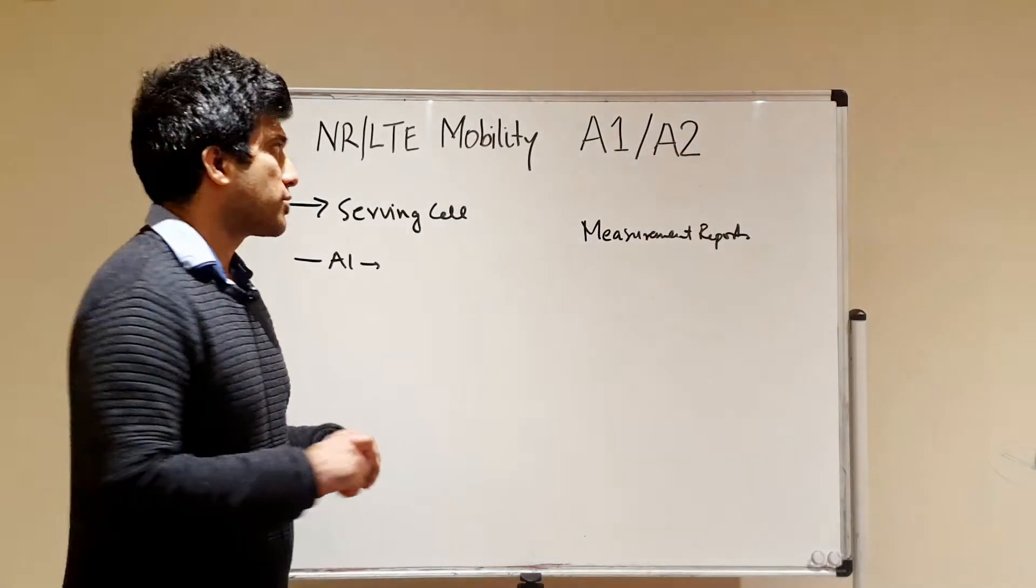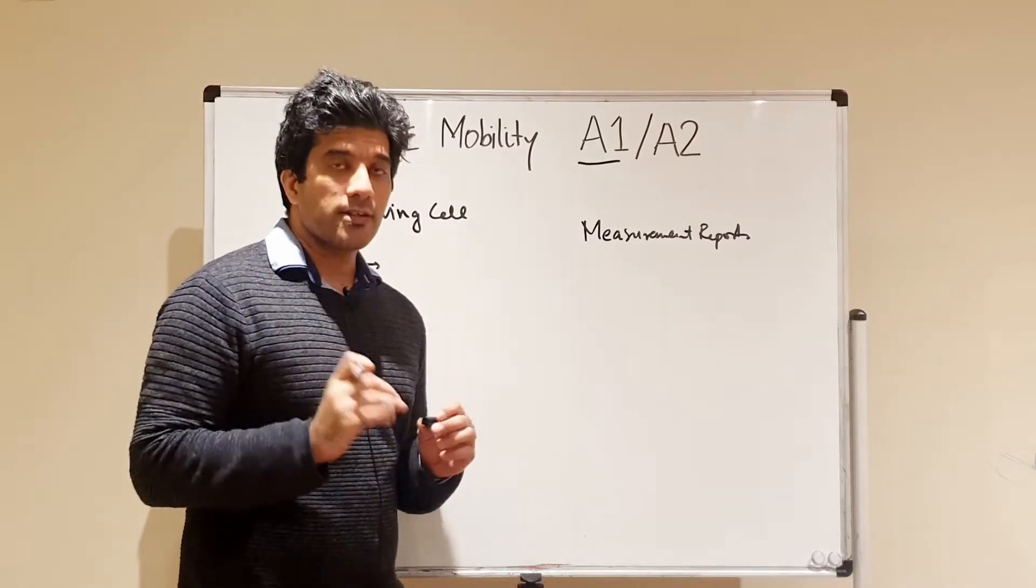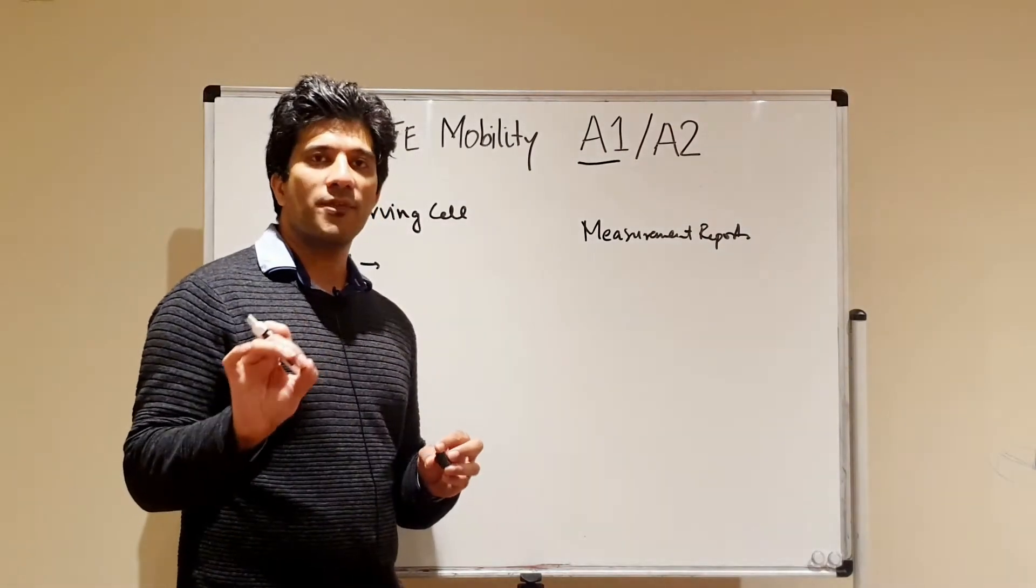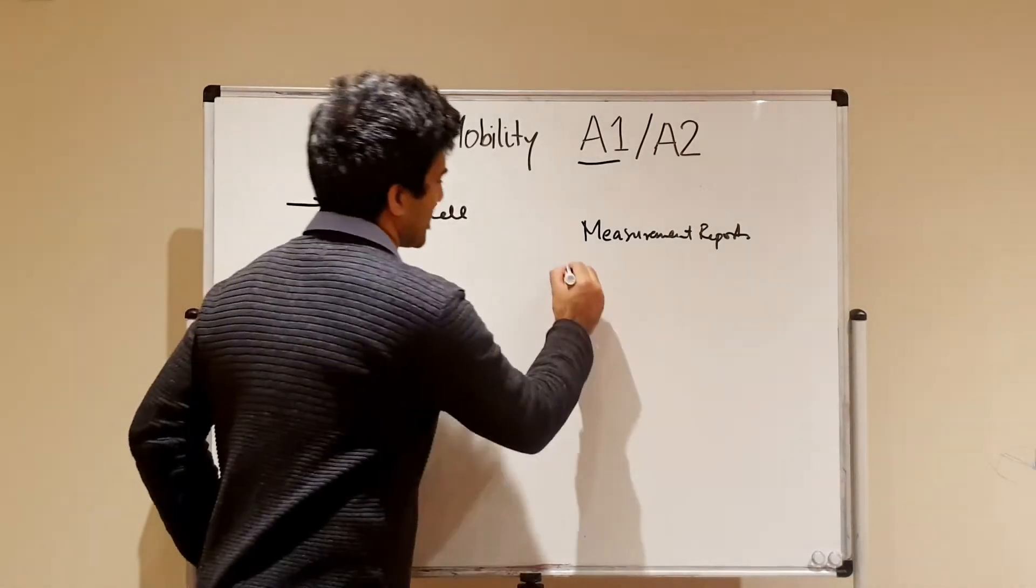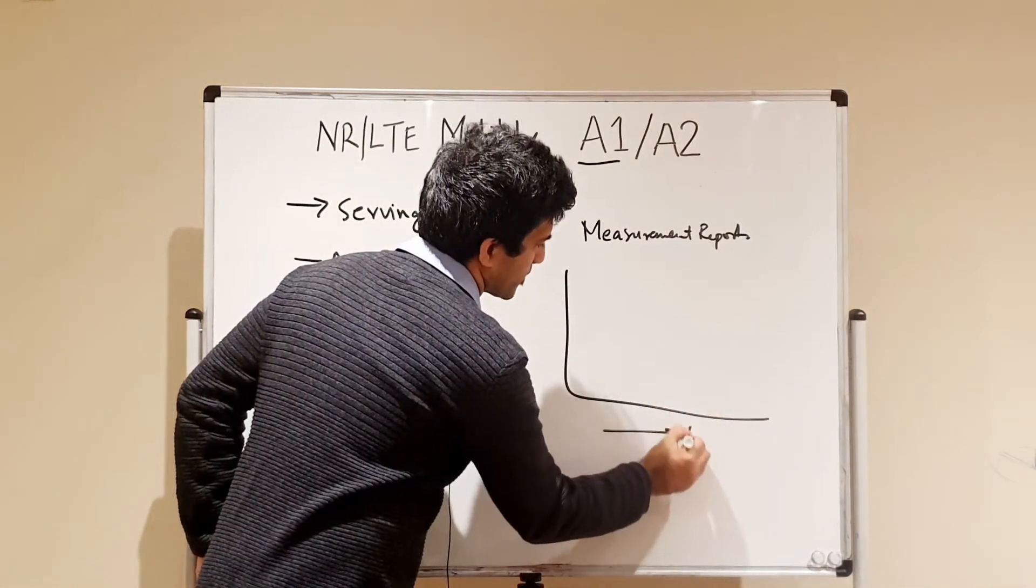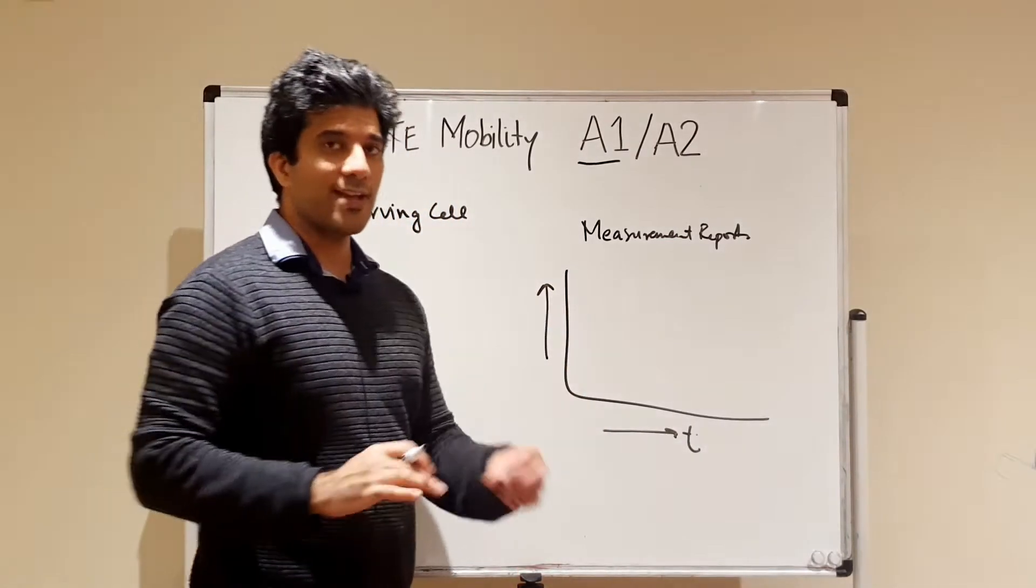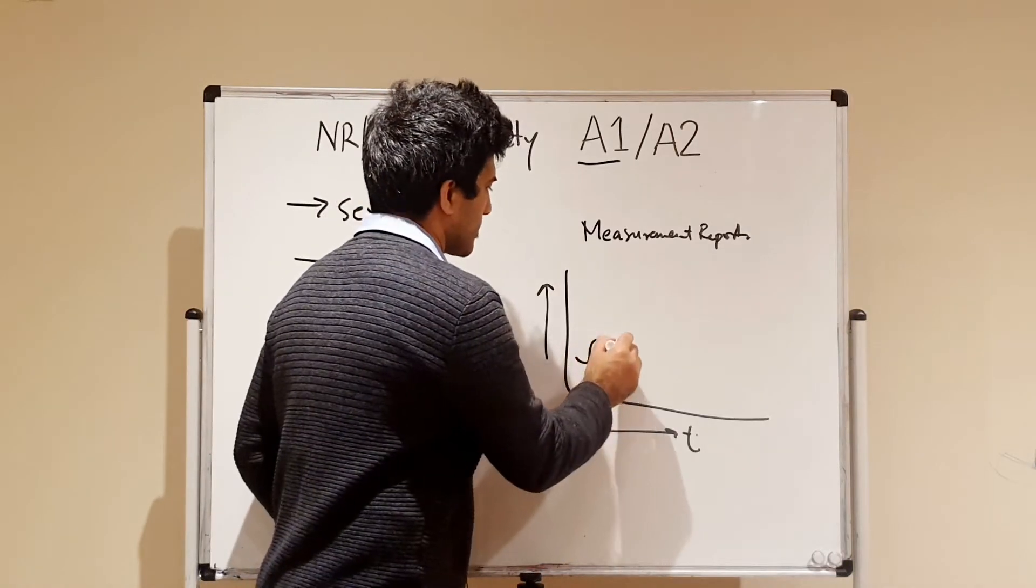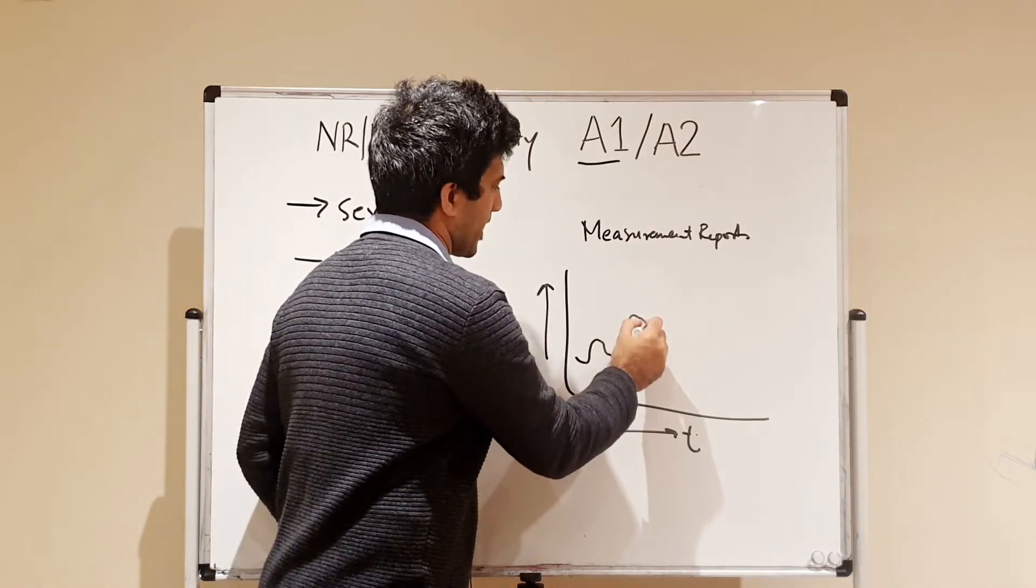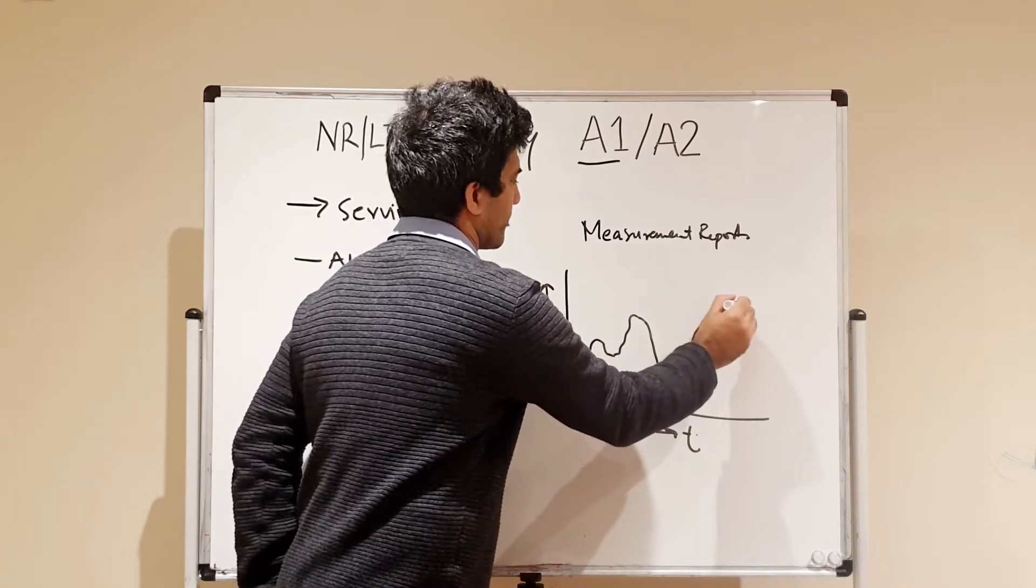A1 threshold is basically the event when your serving cell becomes better than a certain threshold. For example, now this is your time zone and this is your RSRP. So as you're moving, this is your level. Your level goes up and it goes down and it goes back up again.